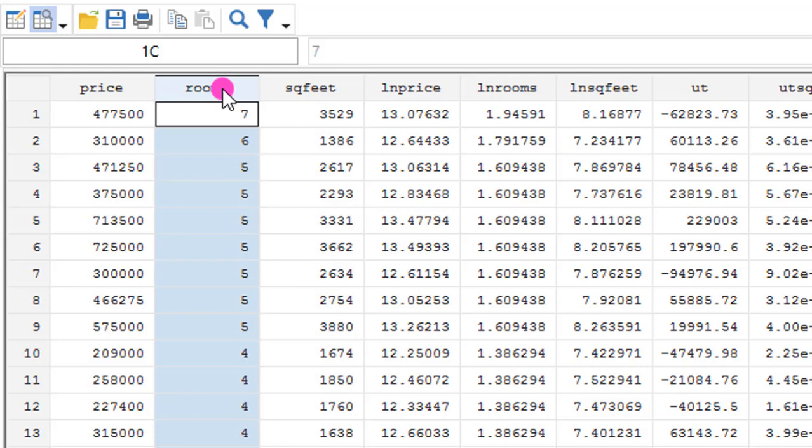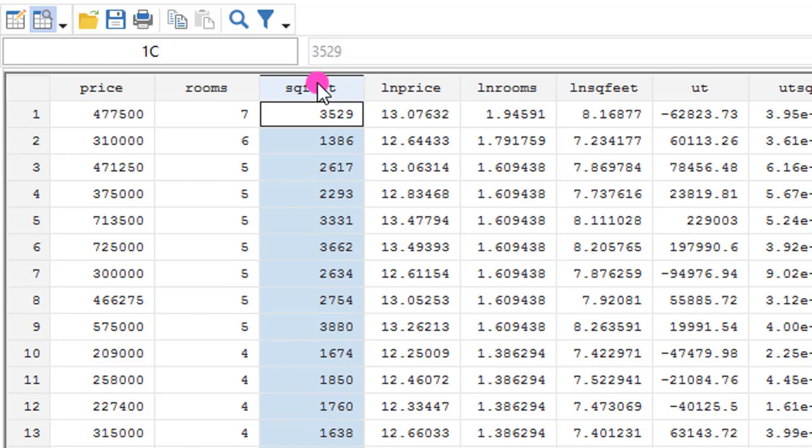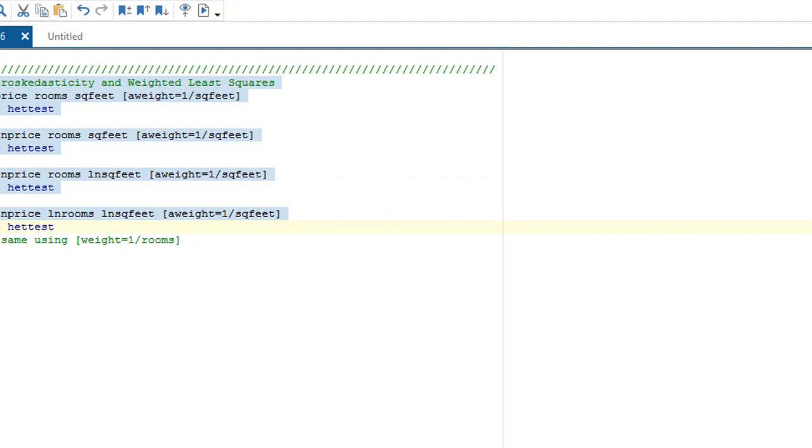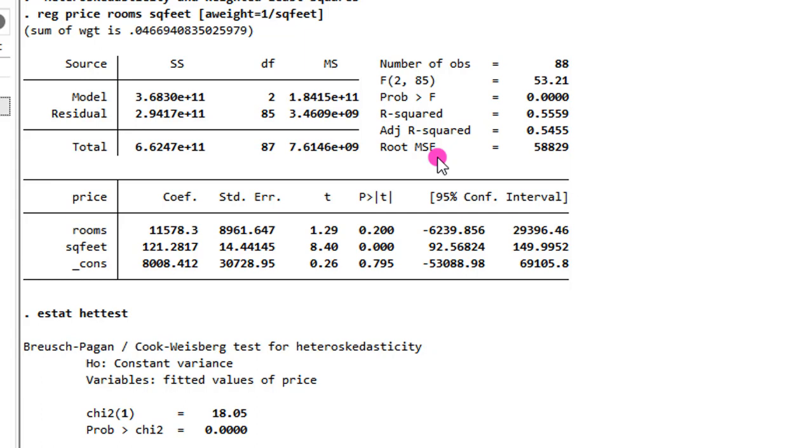So this tutorial, I will only be using square feet as a weight. I have all the commands written here in my do file. So I will simply highlight all and execute. So as shown on the screen, we have the output from the generalized or the weighted least squares. In the first regression, I use the level level or the variables.